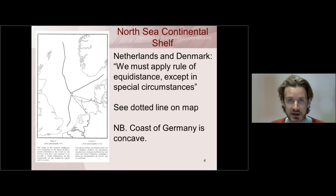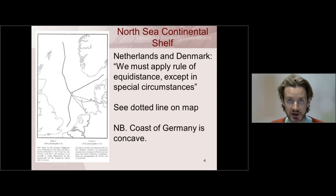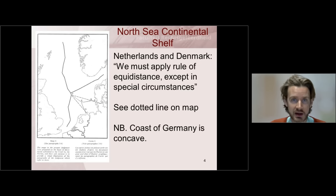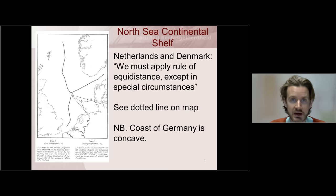This is reflected in the dashed line. The Netherlands and Denmark had a different suggestion: they proposed that the equidistance rule should be applied, because they held that under customary international law the equidistance rule would be determinative of the delimitation of a continental shelf. Because the German coast is concave — is hollow — if you apply the equidistance rule, as reflected in the map, Germany actually gets very little of the continental shelf. So the court was asked which of these two propositions to follow.